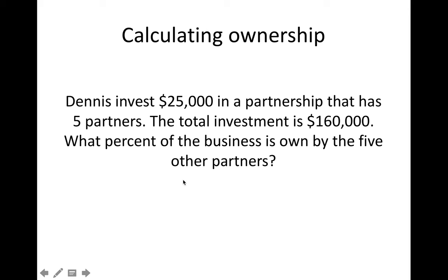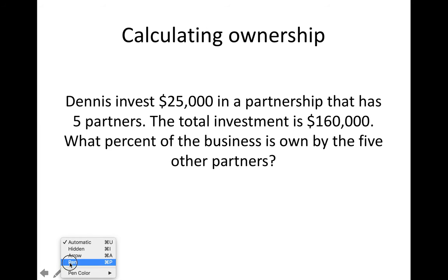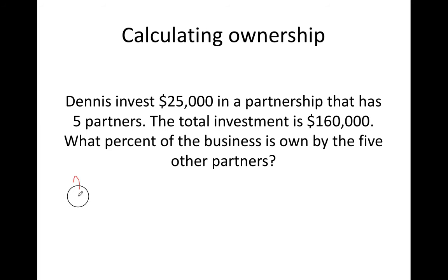Dennis invests $25,000 in a partnership that has five partners. The total investment is $160,000. What percent of the business is owned by the five other partners? So there are five partners plus Dennis, which makes six total. The trick here is you need to find how much Dennis owns first, and then subtract that from 100 percent.